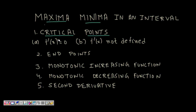Critical points, in a nutshell, are the points where the derivative is zero or the derivative is not defined. And then to find the maxima and minima, you also need to look at the endpoints.